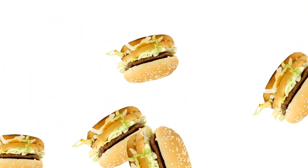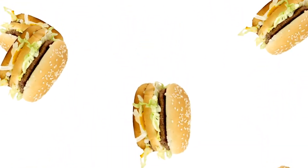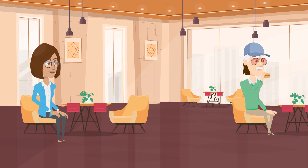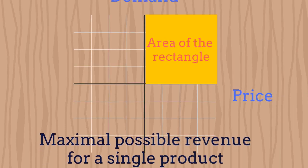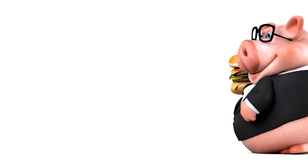If we go to the industry of hamburgers, when we sell always the same type of hamburger, the calculation of the revenue would be very simple. The maximal possible revenue would be the price of the product multiplied by the demand. In fact, if we go to the Cartesian plane with the x-axis representing the price and the y-axis representing the demand, then the maximal possible revenue for a single product would be equal to the area of the yellow rectangle — namely, the price multiplied by the demand.